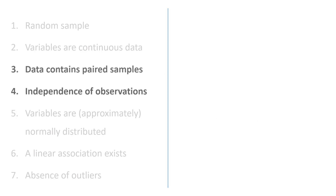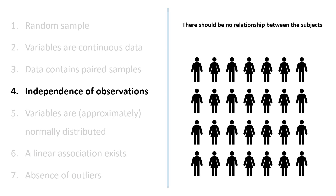The fourth assumption is that there is independence of observations. There should be no relationship between the values of variables between subjects. Each observation of the x variable should be independent of other observations of x, and each observation of the y variable should be independent of other observations of y. You can largely test this by looking at your experimental setup — for example, are any of the subjects recruited in the study related? If so, this would violate the independence of observations assumption.